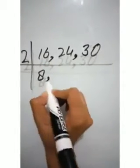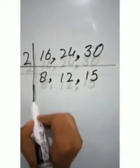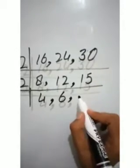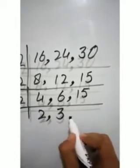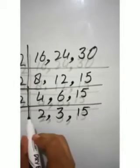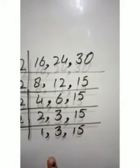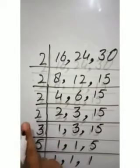Dividing by 2: 2 eights are 16, 2 ones are 2, 2 twos are 4, 2 ones are 2, and 2 fives are 10. Again dividing by 2: 2 fours are 8, 2 sixes are 12. 15 is not divisible by 2, so write it as is. Dividing by 3: 3 ones are 3, 3 fives are 15. So the prime factors for 16, 24, and 30 are obtained.